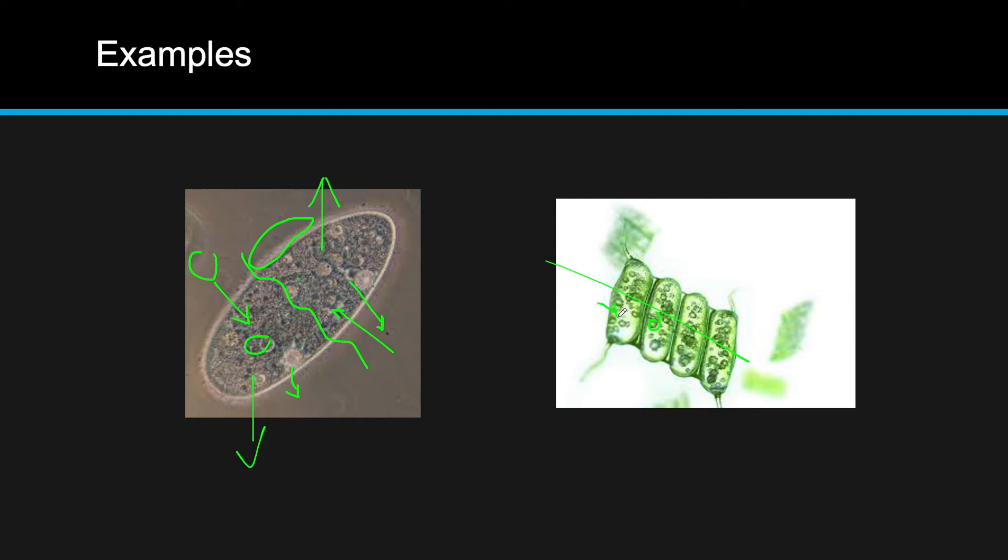Homeostasis: it'll need to maintain that gas balance which is really important for photosynthesis. Excretion: it'll need to remove waste. Nutrition: it needs gases and water for photosynthesis, and then of course, like the paramecium, it will grow over time.